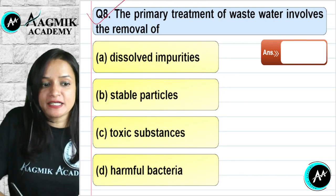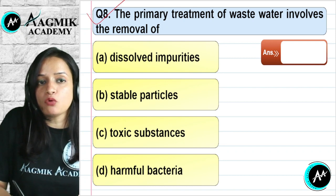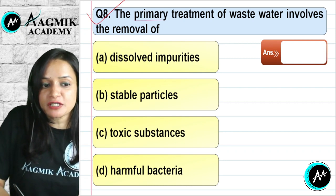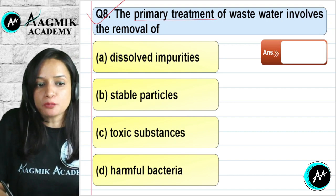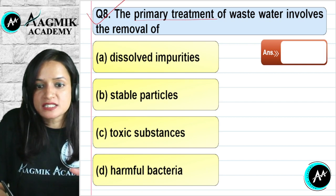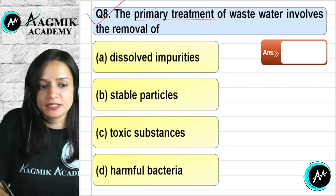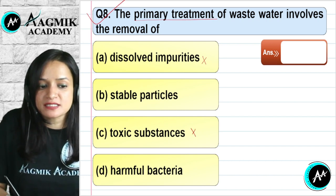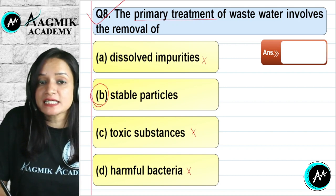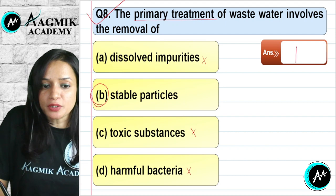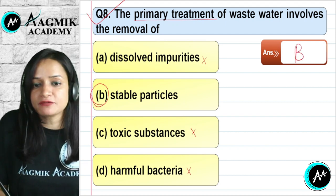Question number 8: The primary treatment of wastewater involves the removal of floating and heavy stable particles. Dissolved impurities are removed in secondary treatment, not primary. Toxic substances and harmful bacteria are also not the focus of primary treatment. Primary treatment removes stable, heavy particles. The correct option is B.